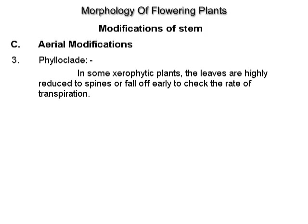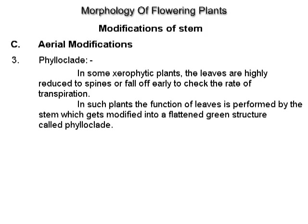Phylloclade. In some xerophytic plants, the leaves are highly reduced to spines or fall off early to check the rate of transpiration. In such plants, the function of leaves is performed by the stem, which gets modified into a flattened green structure called a phylloclade. Example: Opuntia.